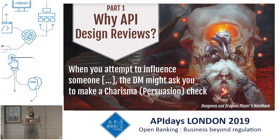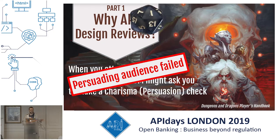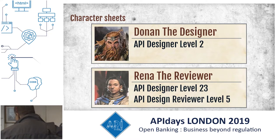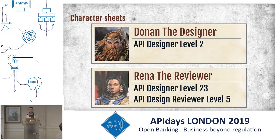Now, what follows is purely fictitious and has never ever happened in any company I've been working with — well, it may have happened, but not exactly like this. Let me introduce you to Donan the designer and Rina the reviewer — names have been changed. Donan is a level 2 API designer, and Rina is a multiclass character who is both a level 23 API designer and a level 5 API design reviewer.